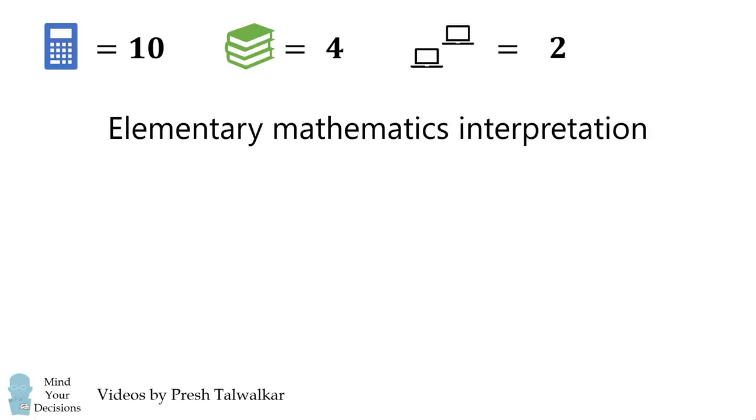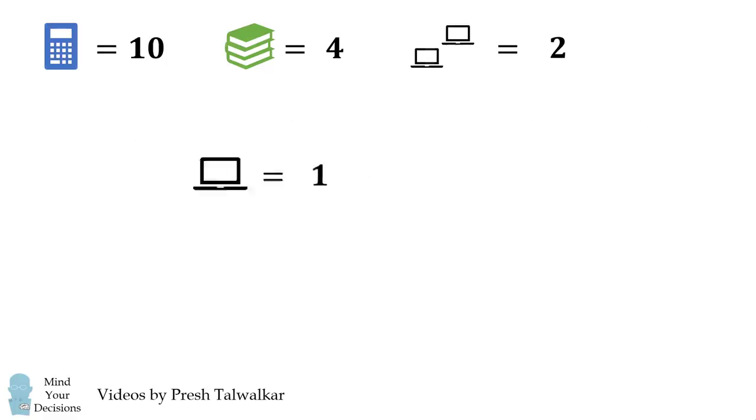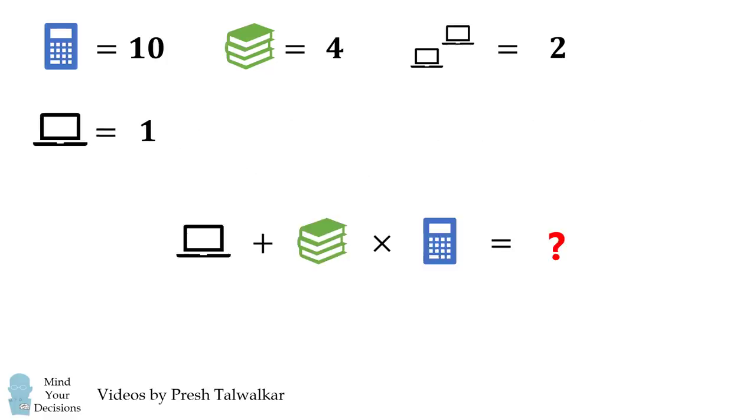Under an elementary mathematics interpretation, these two laptops represent two separate laptops. You want to add the value of each one. Therefore, two laptops is equal to 2, which means one laptop is equal to 1. We then evaluate the final expression.